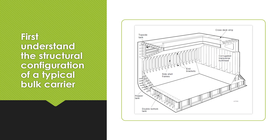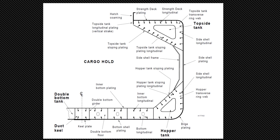A longitudinal section of a typical corrugated transverse watertight bulkhead is also shown. Bulk carrier design does not alter significantly with size — fundamentally a bulk carrier usually has the same structural configuration regardless of deadweight. So a 30,000 or 40,000 deadweight ship will have the same kind of structural configuration as an 80,000 or 90,000 ton deadweight bulk carrier.